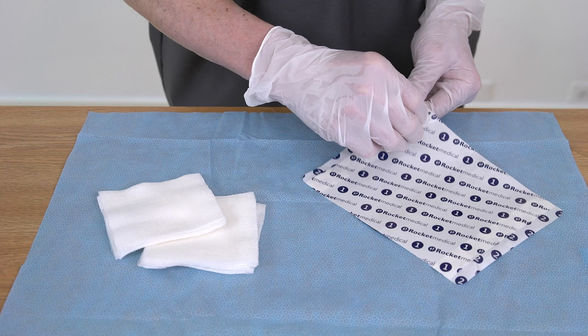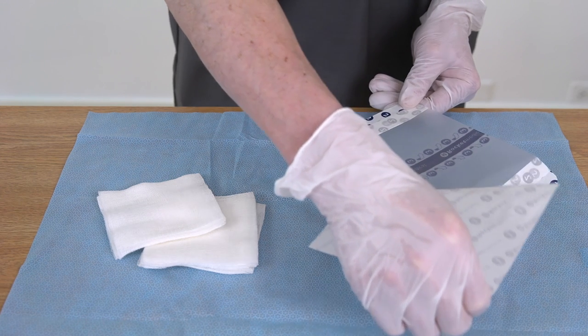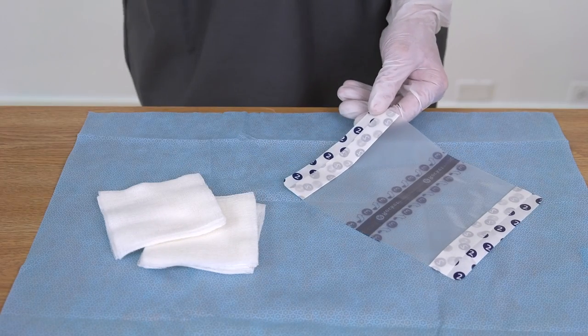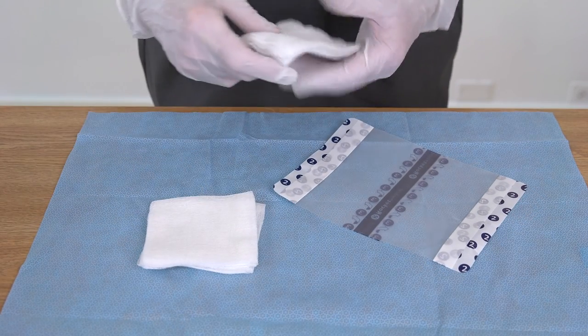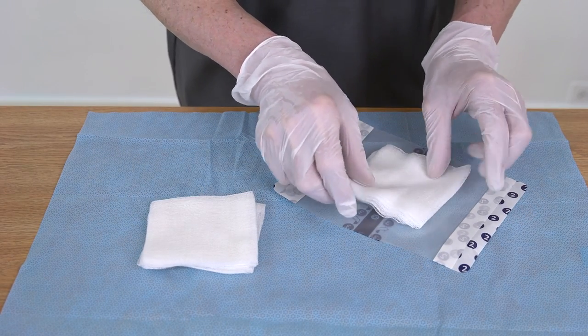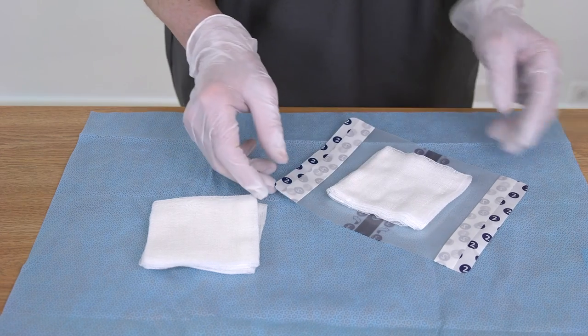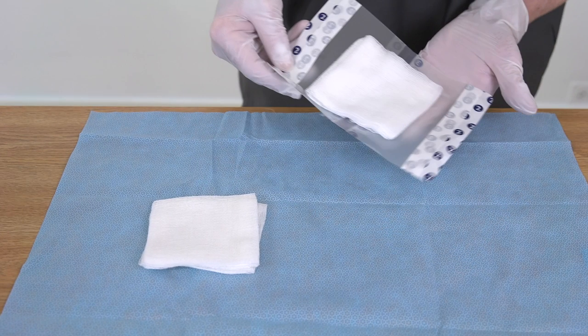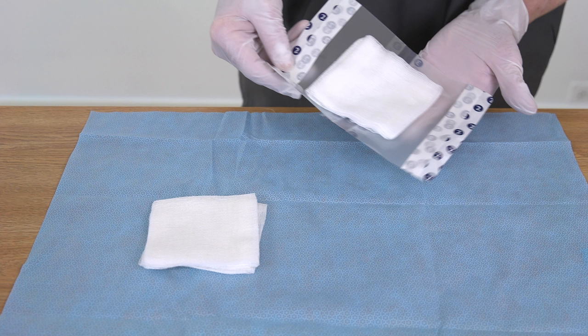Open the Seaview dressing with the backing material facing toward you. The dressing features a numbered, three-step application process. First, peel off the backing labeled 1, using the split in the center. Place approximately three pieces of gauze on top of each other in the center of the sticky material. Ensure there is plenty of space around the gauze. This will make it easier for you to apply the Seaview dressing.